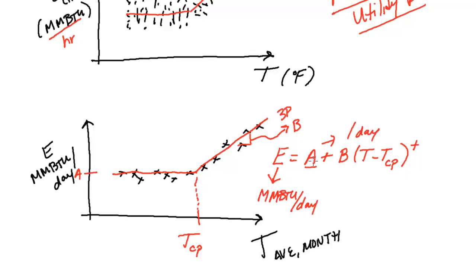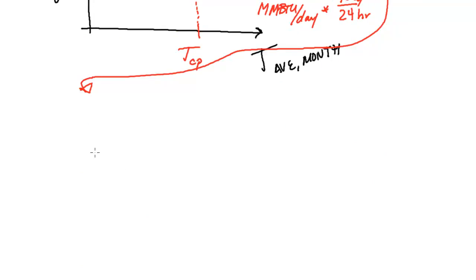So, there's nothing that stops us from saying, okay, this is per day, I want it per hour. To do that, we would just multiply both sides by one day is 24 hours. We could also move this from—it's monthly data, but it's at a daily scale—let me scroll down, to the point now where we can divide both sides by 24. So, you can have A divided by 24 plus B divided by 24, (T minus T change point) positive.